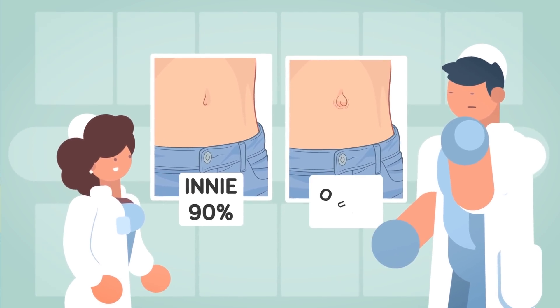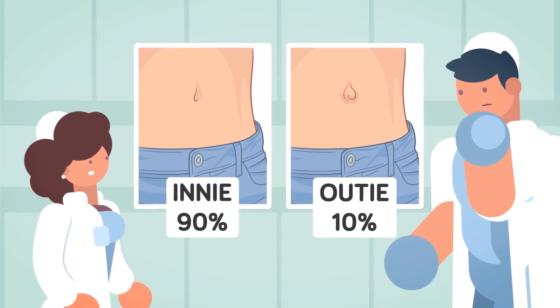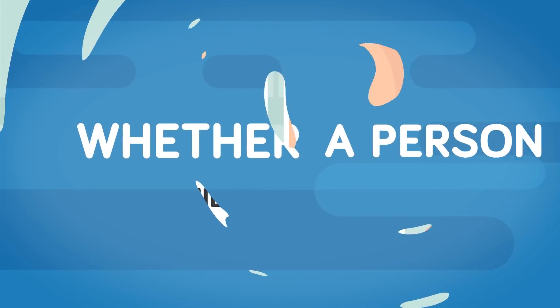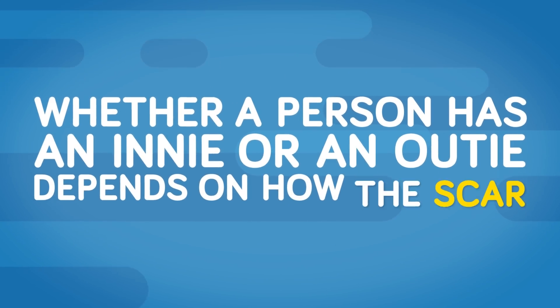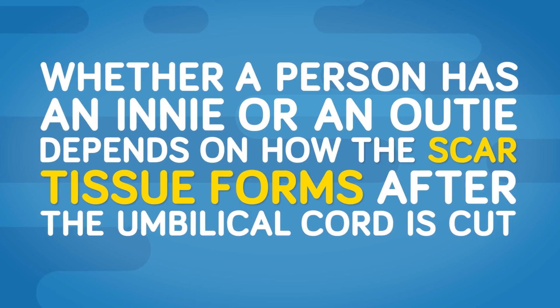An outie, on the other hand, pops outward like a little button, and only about 10% of people have one. Whether a person has an innie or an outie depends on how the scar tissue forms after the umbilical cord is cut.